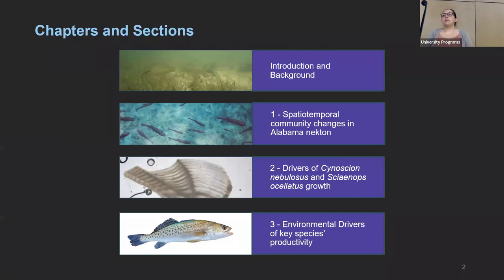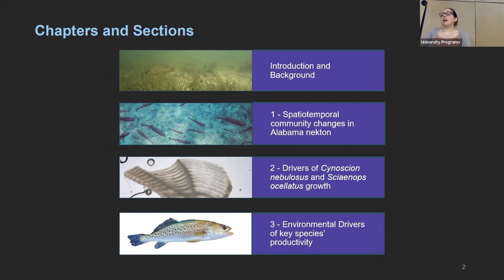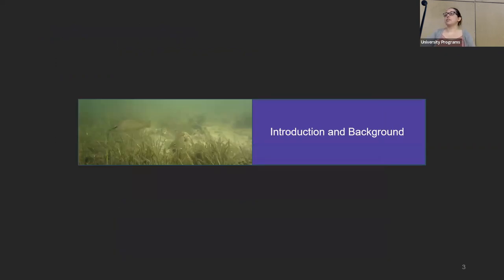First I'm going to be giving some introduction and background information, and then I'll get into the three chapters of my dissertation. The first chapter focuses on spatiotemporal community changes in Alabama necton. The second looks at drivers of Cenosean Nebulosis and Cyanops Oscillatus growth — those are speckled trout and red drum, respectively. And my third chapter looks at environmental drivers of key species productivity.